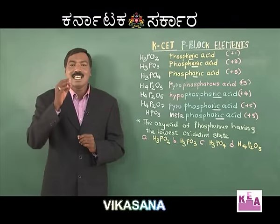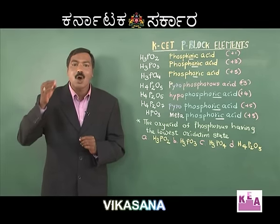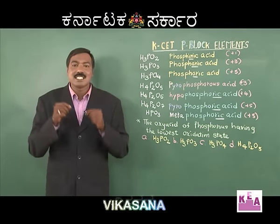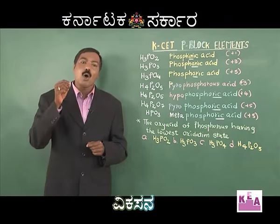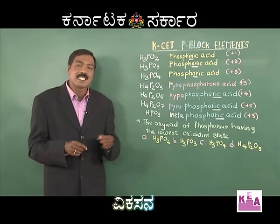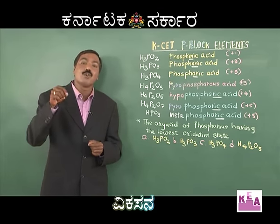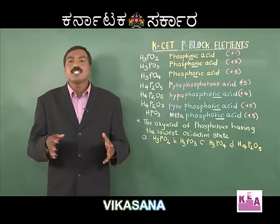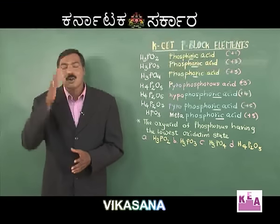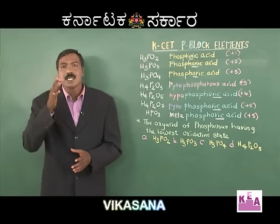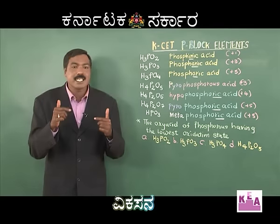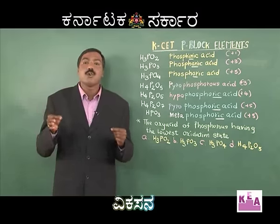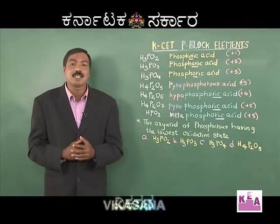I am repeating: 'in, on, or.' If you know 'in,' that means it is phosphinic acid. If you know 'on,' it is phosphonic acid. And the last one is phosphoric acid. So if I ask you H₃PO₃, what is its name? Remember 'in, on, or' — it is in the second position, therefore it is phosphonic acid. Hope you got it.